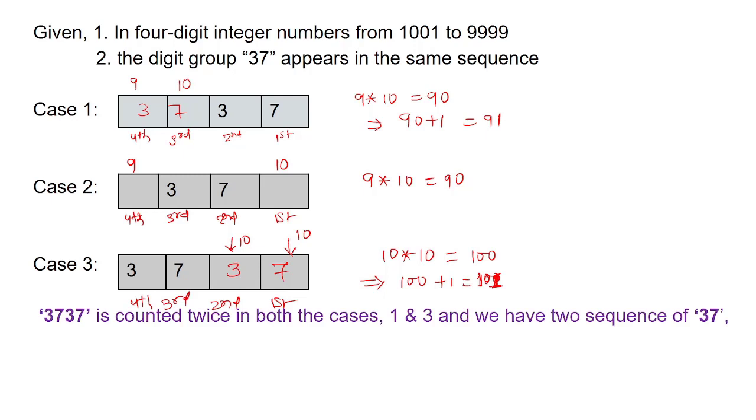Here we can notice that '3737' is counted twice in both the cases, case number one and case number three, and we have two sequences of '37' in each of the cases. Hence, the total number of appearances of sequence '37' would be 91 plus 90 plus 101 minus 2, that is 280.